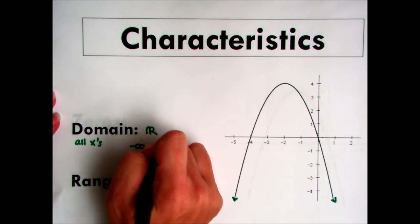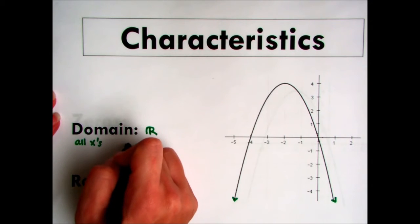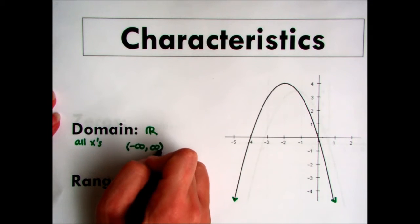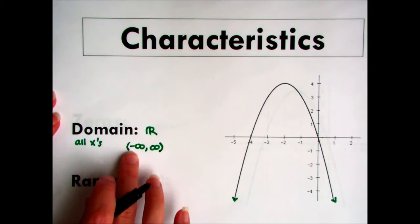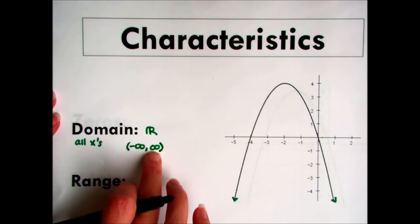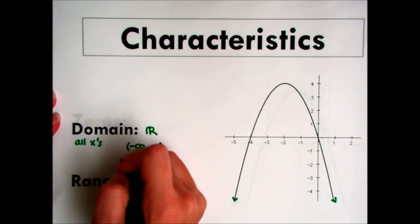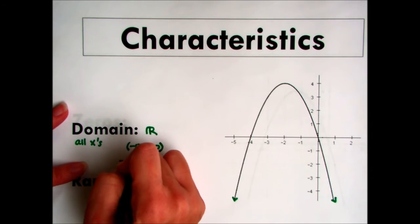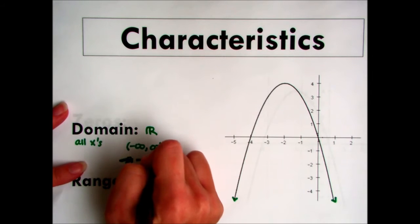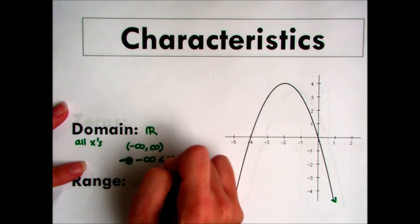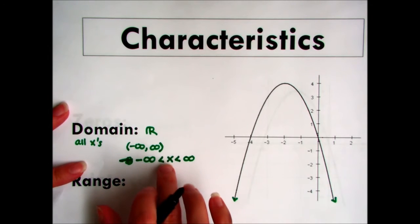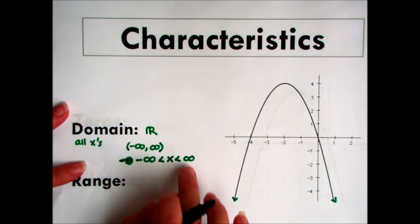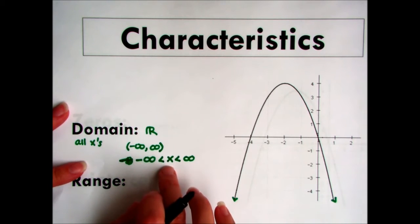And remember, we're going to use a curved bracket to show that it's continuous, it continues on. So it's from negative infinity to positive infinity. Or the other way you can write this is that negative infinity is less than x is less than positive infinity. In other words, x can be between negative infinity and positive infinity. It can be any value.